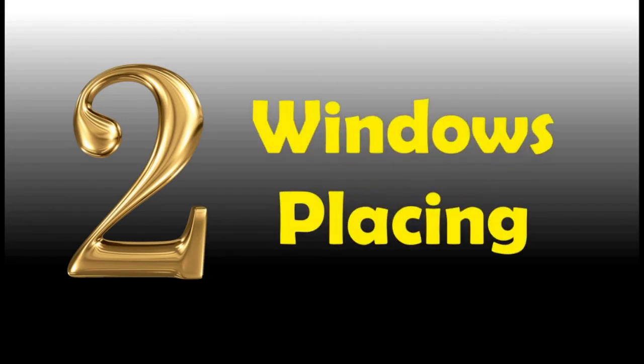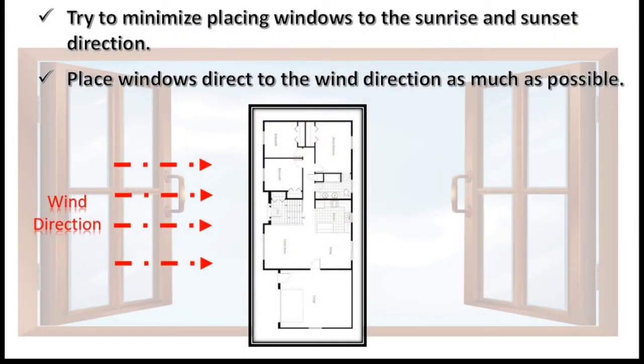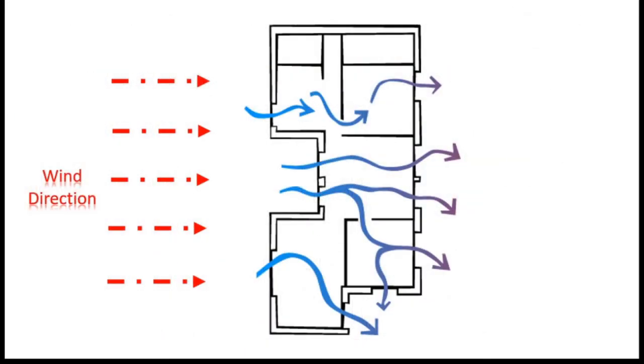Number 2. Windows Placing. Try to minimize placing windows to the sunrise and sunset directions. It will help to reduce entering sun rays into your house directly. Place windows direct to the wind direction as much as possible. As shown in this picture wind should be able to go through your house. It is very important because if you provide open pass to wind to go through your house it will take all heated air particles away from your house.